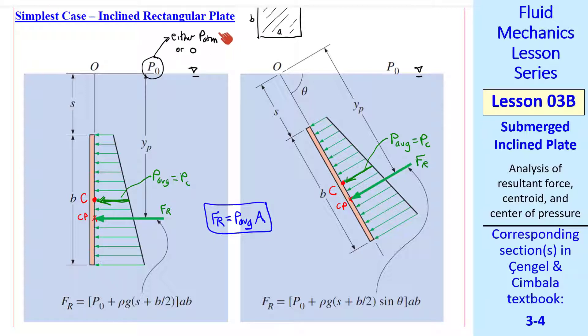We use P atmosphere if we want to work with absolute pressures. We use 0 if we work with gauge pressures. Gauge pressure analysis is simpler, so we're always going to do that. This applies to either case, vertical or inclined plate.